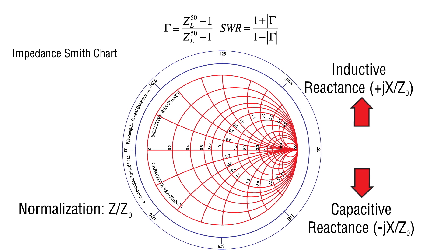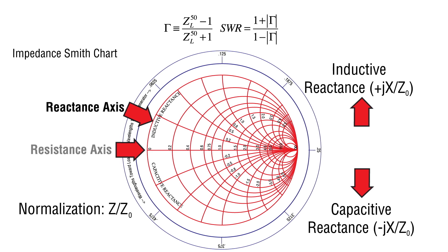It should be emphasized that the use of a Smith chart implies a single frequency situation. There are several names associated with features on the Smith chart. The outer circle is called the reactance axis, and the horizontal line through the center of the chart is called the resistance axis. The center point in the Smith chart is referred to as the prime center.